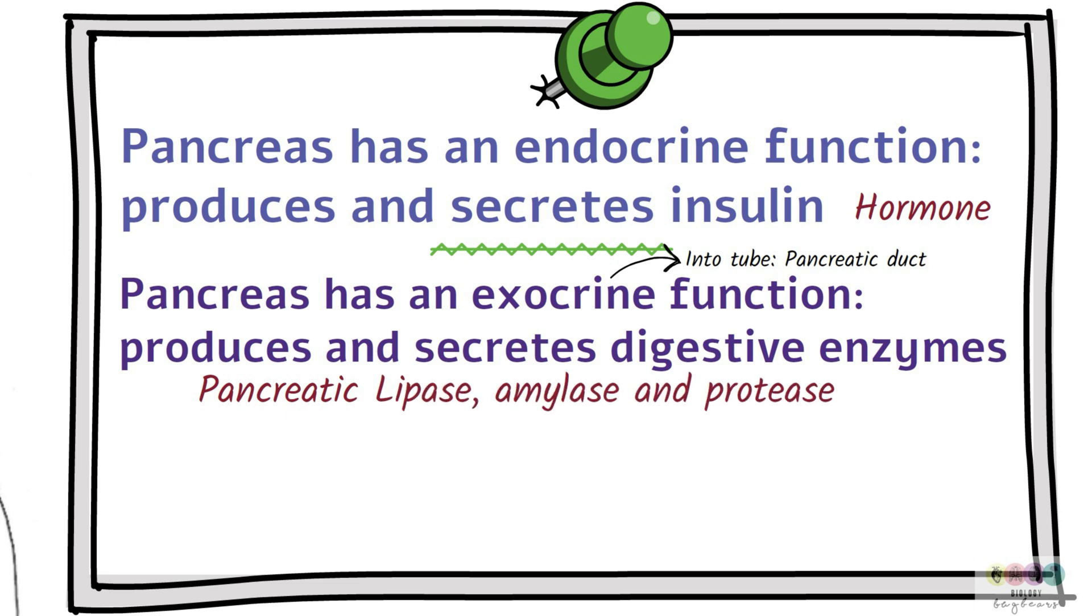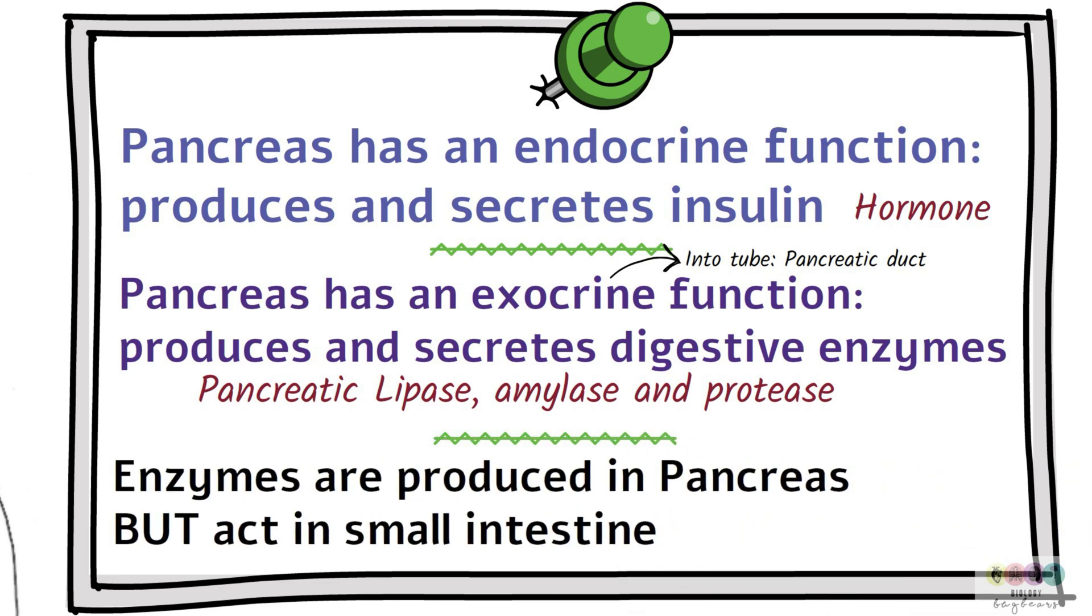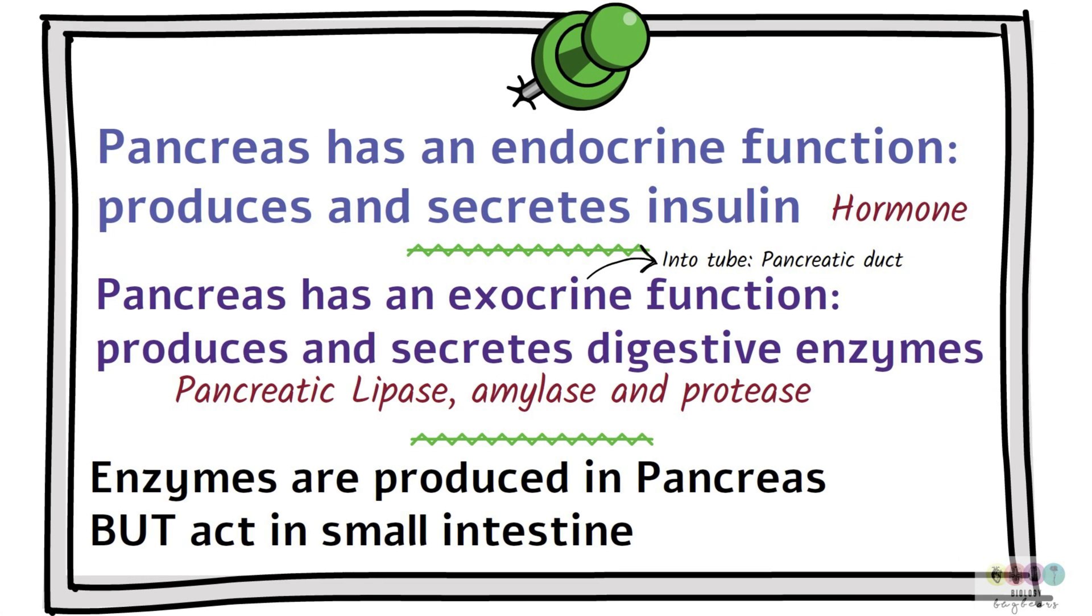So the pancreas makes and secretes pancreatic lipase, amylase and protease. These enzymes are produced in the pancreas. But they act in the small intestine. These enzymes work best in a slightly alkaline environment. pH of greater than 7, less than 9.